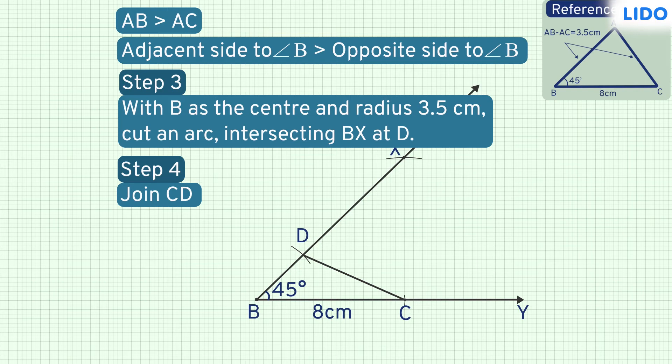We know that vertex A should lie somewhere on ray BX, but where exactly? Let's think about it.